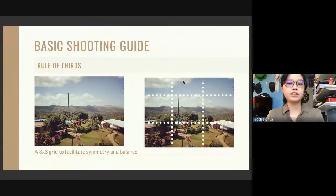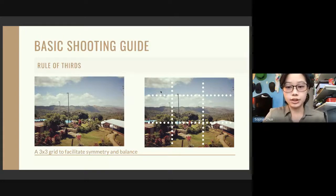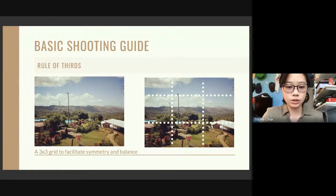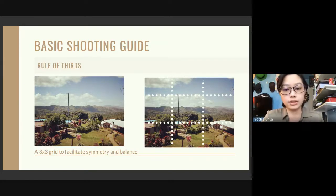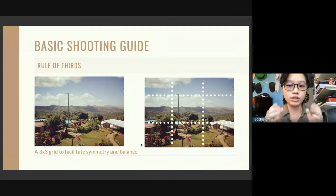For the basic shooting guide, there are three rules we essentially have to follow. The first rule is the rule of thirds — a three by three grid to facilitate symmetry and balance. The points where the grid lines intersect I like to call interest points, because that's where the audience normally tends to look. You can see that the frame was composed so that the subjects — the pool and the multi-purpose building — are placed at the locations of these points. So everywhere you look, always try to imagine this three by three grid.